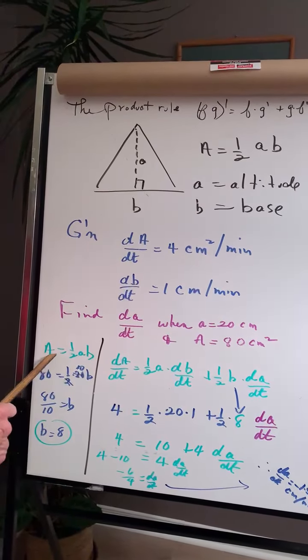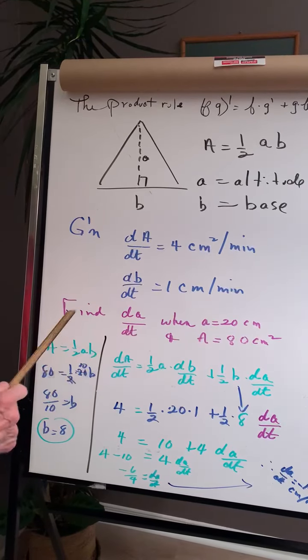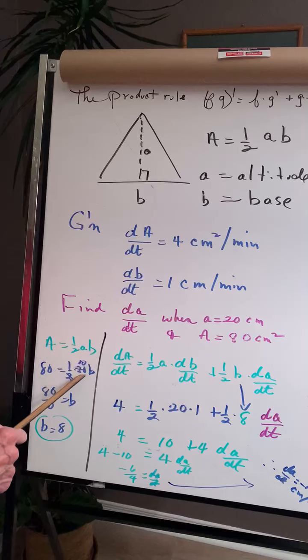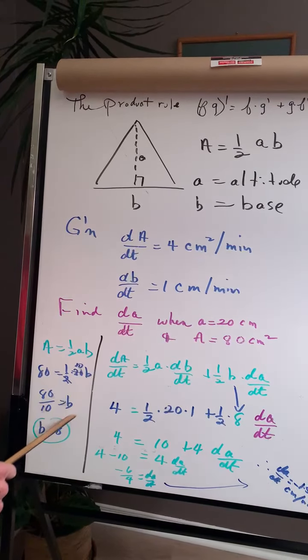So let's go over here. I need to find the value of the base. Area is 80, a is 20. Now I can find b will be 8.